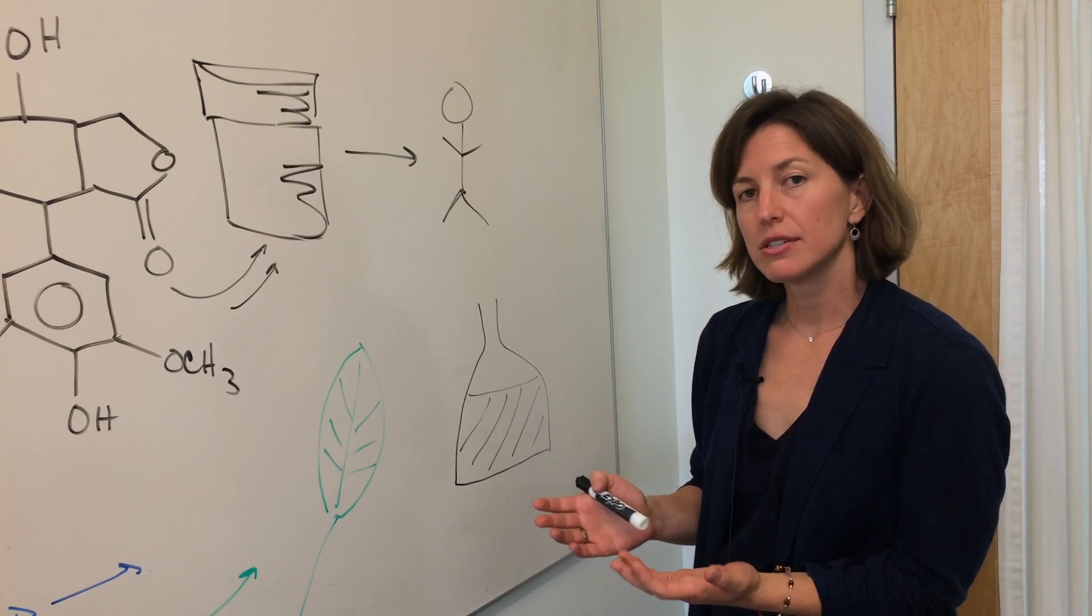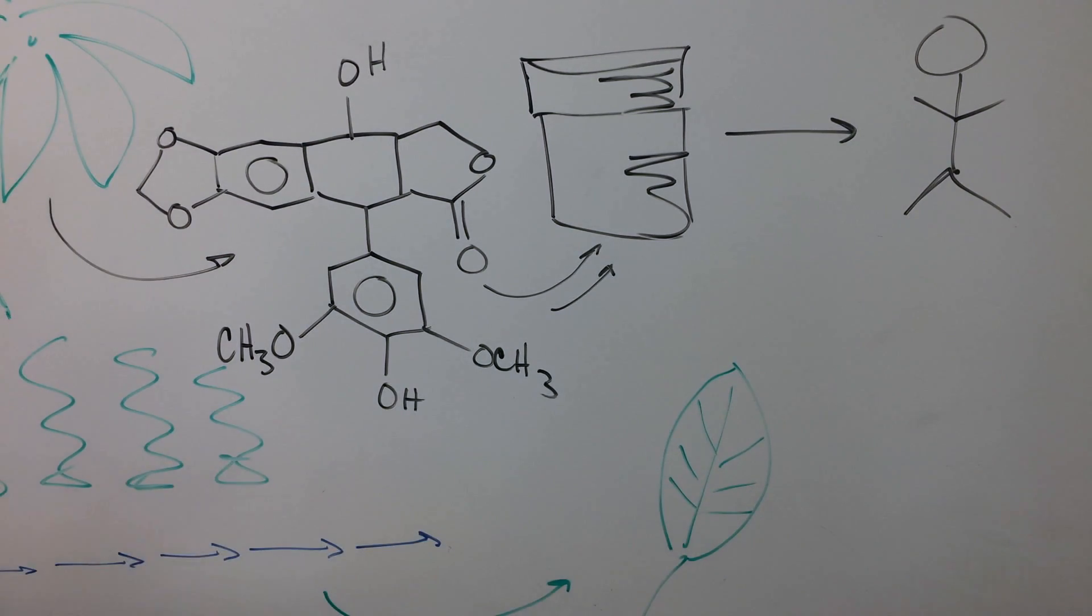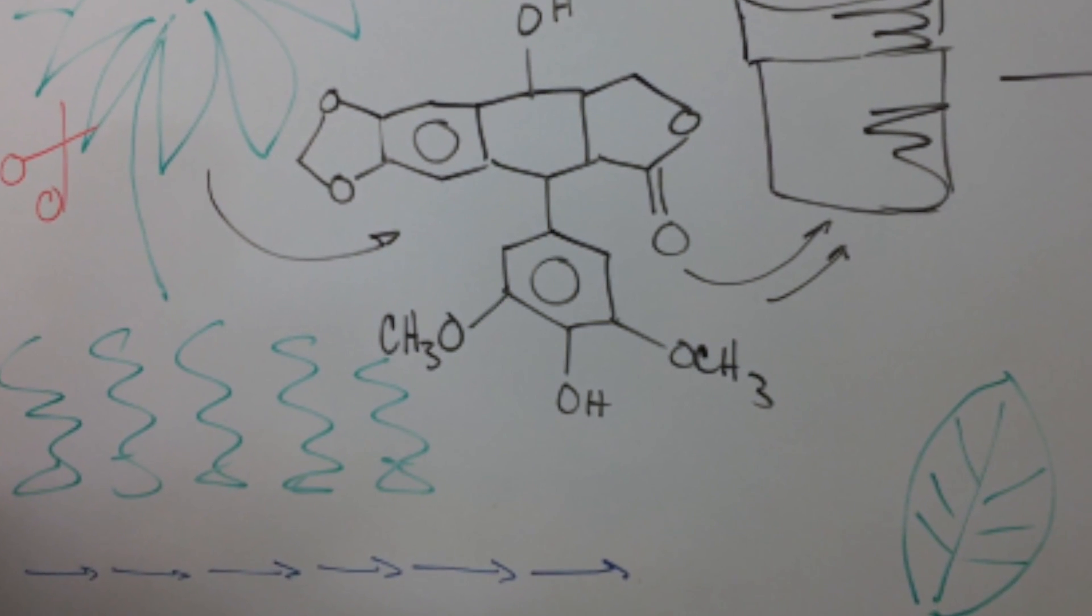When we put these genes in tobacco and then we look to see what was in the leaf, sure enough we found the precursor to this drug, the etoposide aglycon, present in tobacco leaves.